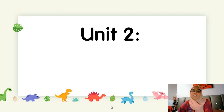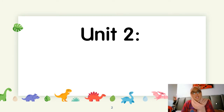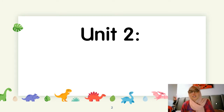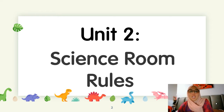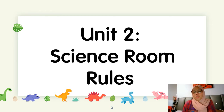So today, we are going to go to the next chapter in our science textbook. That is Unit 2. Can you turn to page 11? Unit 2 — the topic is science room rules. Peraturan bilik sains.